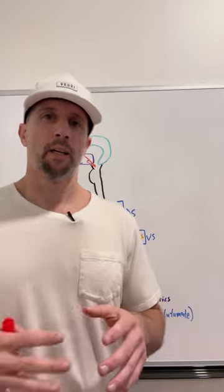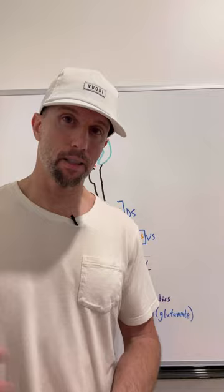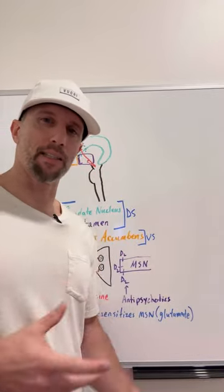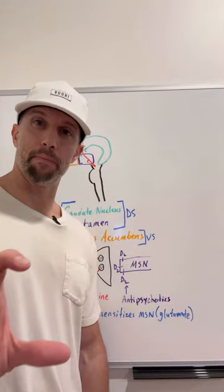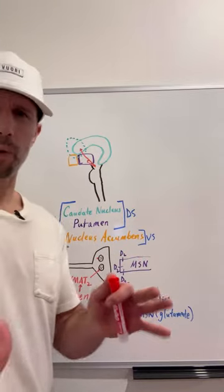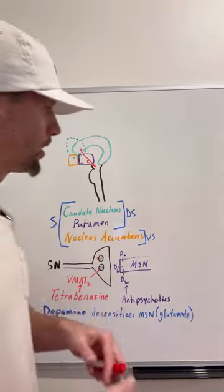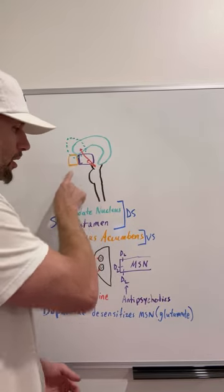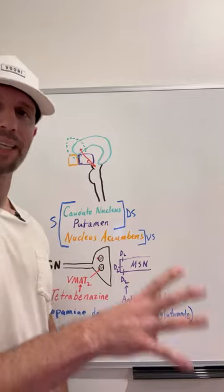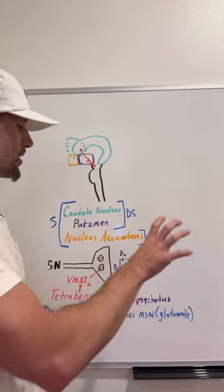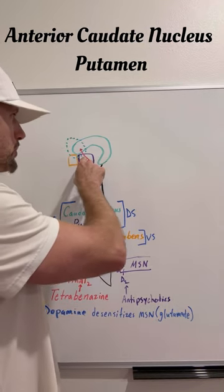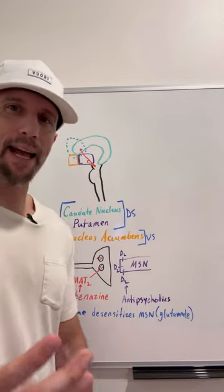There are drugs that are used to reduce these symptoms — they don't decrease the progression of disease, but they reduce the symptoms. Dopamine plays a big role in the balance of excitatory versus inhibitory in our basal ganglia. Key nuclei in our basal ganglia are the putamen and the caudate nucleus, which are the dorsal striatum. The striatum also includes the ventral striatum, which includes the nucleus accumbens — involved in our reward pathway, the mesolimbic system — but for Huntington's disease we're talking about just the dorsal striatum, the anterior caudate nucleus and putamen.